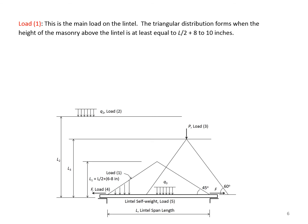Let's talk about these loads more in detail. Load one, as highlighted in red, is the main load on the lintel. The triangular distribution forms when the height of the masonry above the lintel is at least equal to L/2 plus 8 to 10 inches. Remember, L is the span length of the lintel.